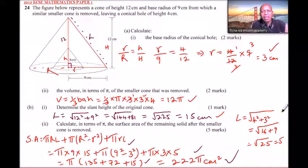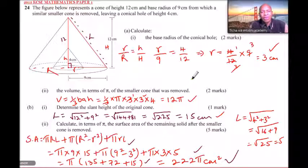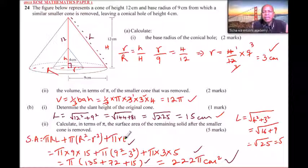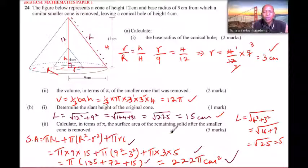This is a straightforward question as long as you remember similarity and enlargement — the ratio of corresponding sides gives a constant. The other knowledge needed is the Pythagorean theorem, which you learned even in primary school, and the formulas for the volume and surface area of a cone from Form Two. With all that, you should be able to get all 10 marks. Thank you for watching.